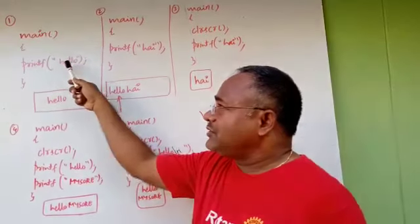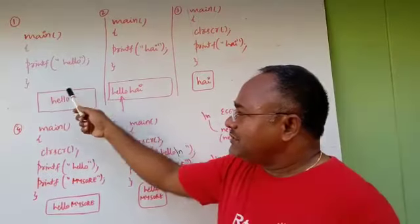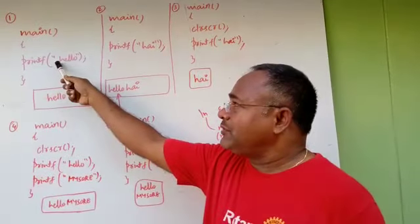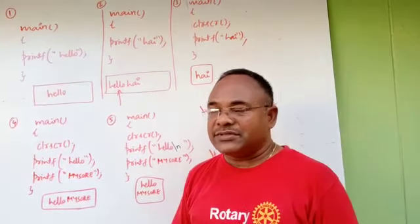So we can have any number of statements within a block. The output of this is hello only. Whatever you put within double quotations that will be displayed on screen. Printf is an output function, in detail we will be discussing later.